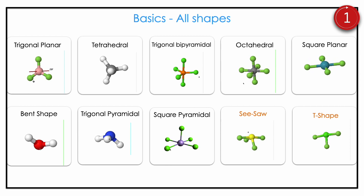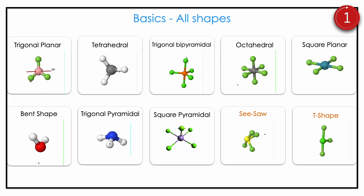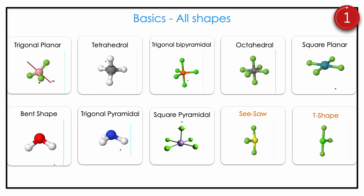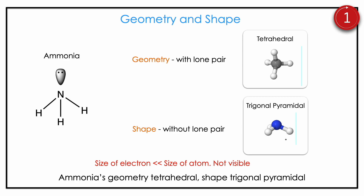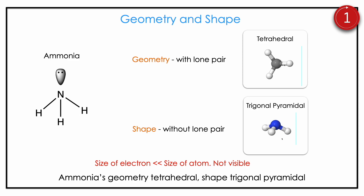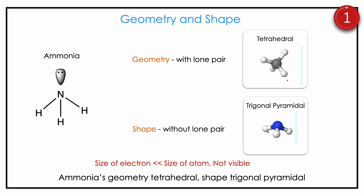Let us look at the shapes once more before going into more detail: trigonal planar, tetrahedral, trigonal bipyramidal, octahedral, square planar, bend shape, trigonal pyramidal, square pyramidal, seesaw, and T-shaped. Seesaw is hard to imagine — better rewatch and understand it. The important difference: geometry means the position of all atoms including lone pairs, mathematically. Shape means without lone pairs, because the size of the electron is way less than the atom, so lone pairs are not visible. Ammonia's geometry is tetrahedral but its shape is trigonal pyramidal.